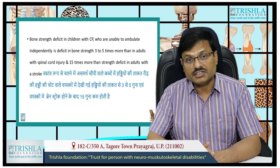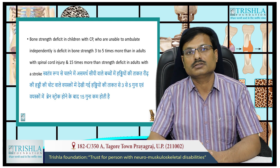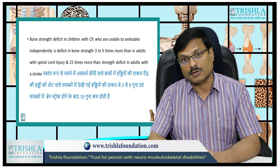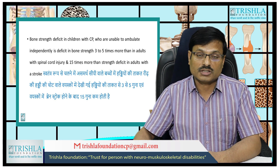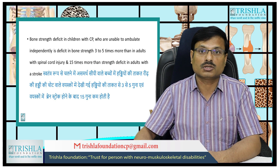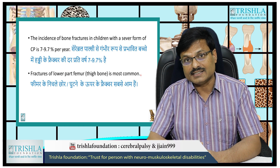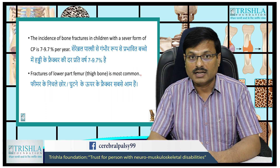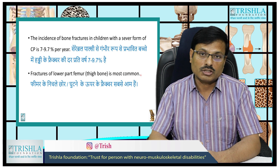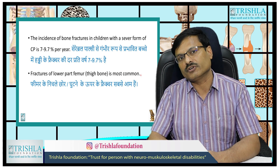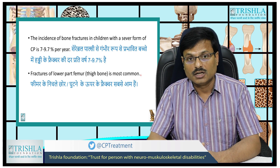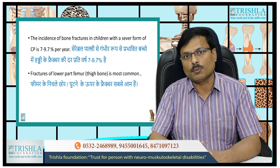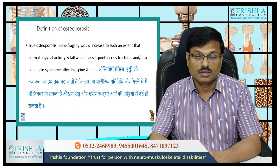Bone strength deficit in cerebral palsy children who are unable to walk independently is more than 3 to 5 times less than in adults with spinal injury, and 15 times less than in adults with stroke. The incidence of bone fracture in children with severe cerebral palsy is about 6 to 9.7 percent per year — meaning 7 to 9.7 percent of severely affected children will get a fracture in one year. The most common fracture site is the supracondylar femur area near the knee joint.